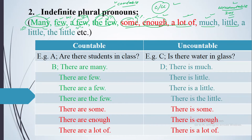Now we will look at examples for countable and uncountable nouns. First, for countable nouns — the green ones — and red ones for both countable and uncountable: some, enough, a lot of appear in both categories. If A is asking 'Are there students in the class?' and I say 'There are many' — instead of the noun 'students,' I am using the pronoun 'many' without knowing the exact number, making it an indefinite plural pronoun. 'There are few' means around 30 percent.